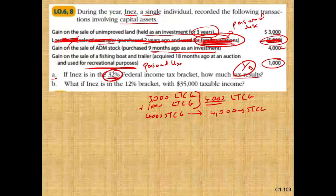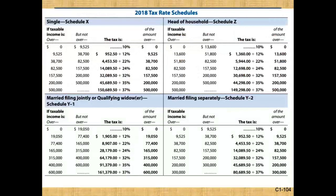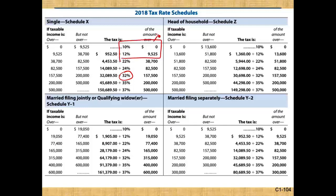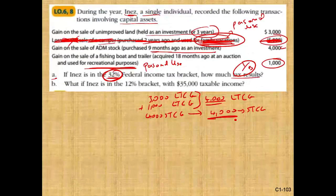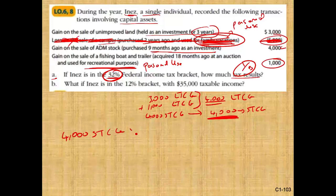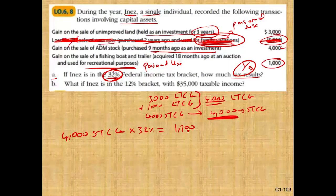Now, if we're in the 32% tax bracket, how much taxes do we pay? Let's go back to the table — we fall in the 32% tax bracket. Remember the capital gain rules. Let's take care of the short-term first because it's easy. The $4,000 short-term capital gain is subject to ordinary income tax. Our ordinary income tax is 32%, so $4,000 times 0.32 — the tax on the short-term is $1,280.